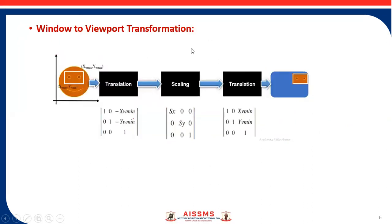Window to viewport transformation requires these steps: first, the original world coordinate system is translated using the translation matrix; after that, it is scaled down according to the viewport using the scaling matrix; and again after scaling, it is translated to the viewport using the final translation matrix.